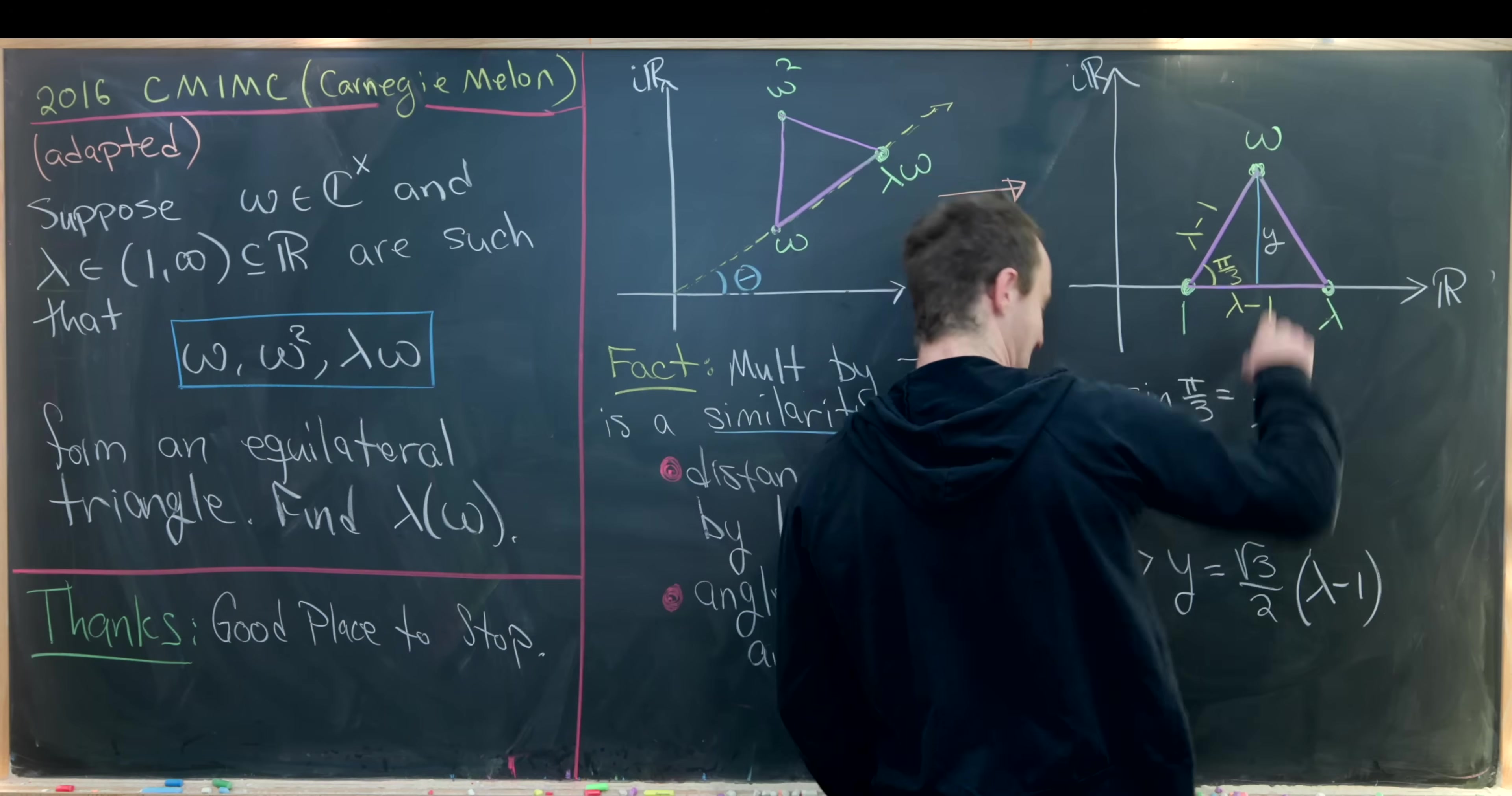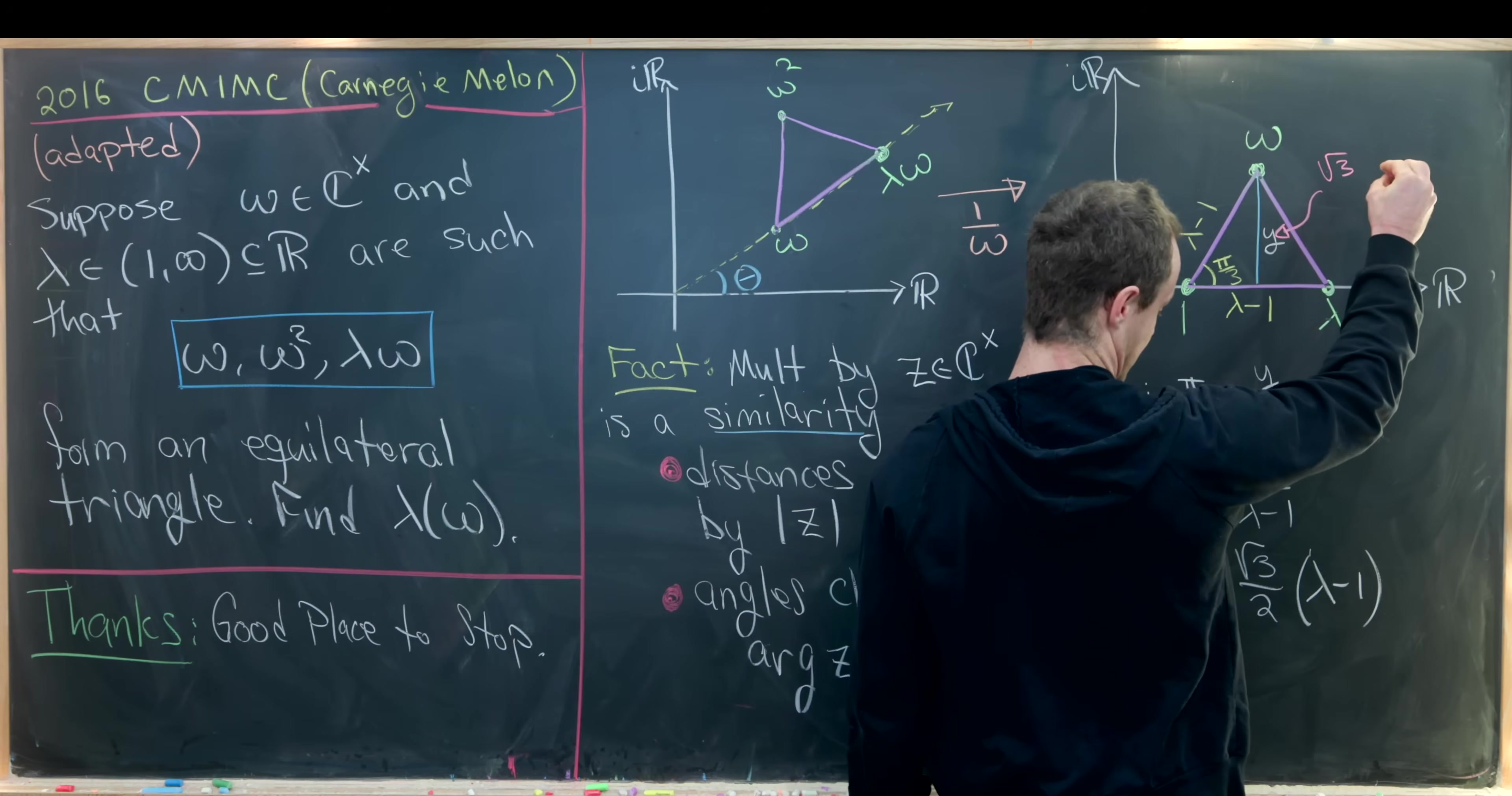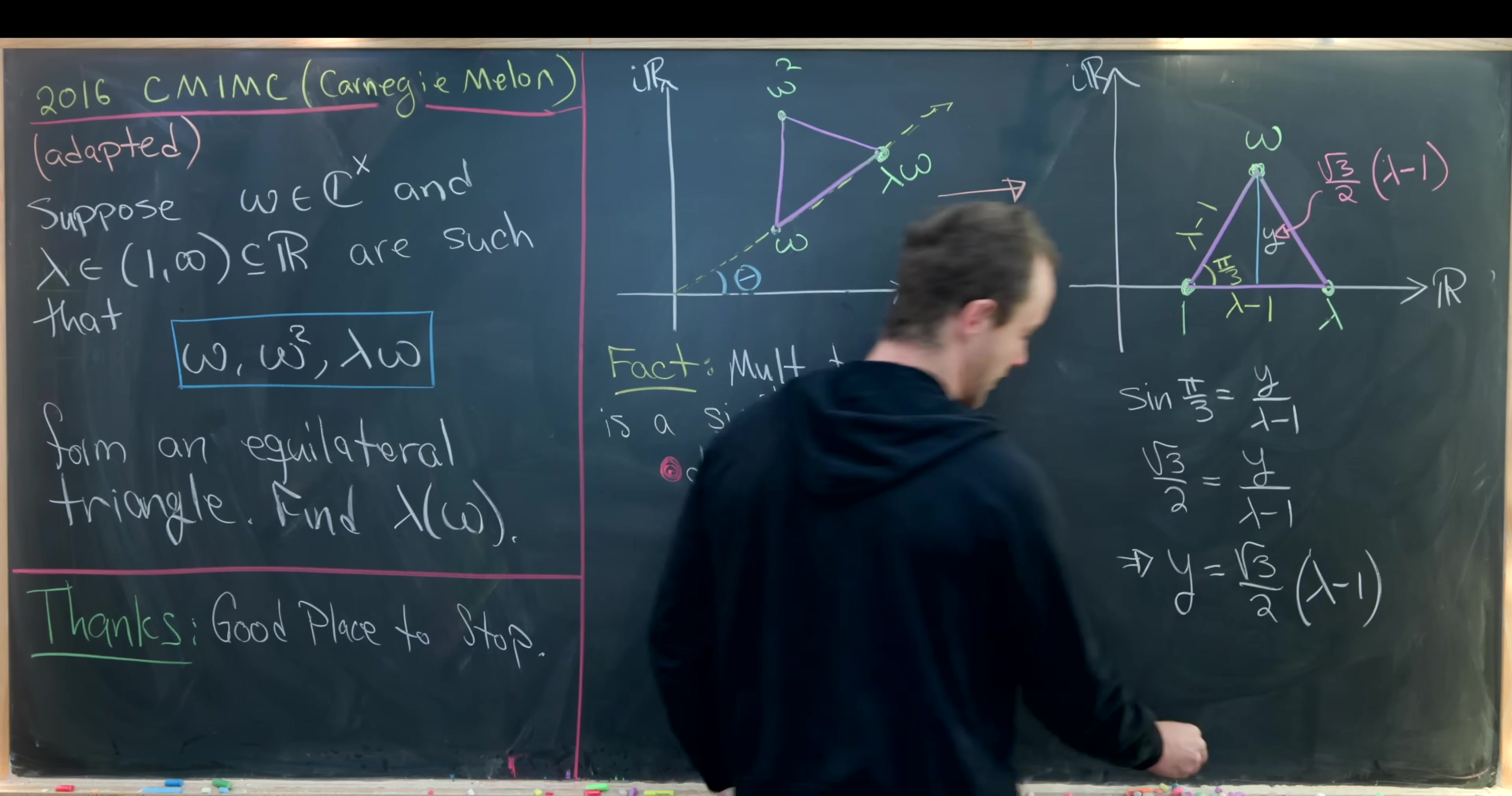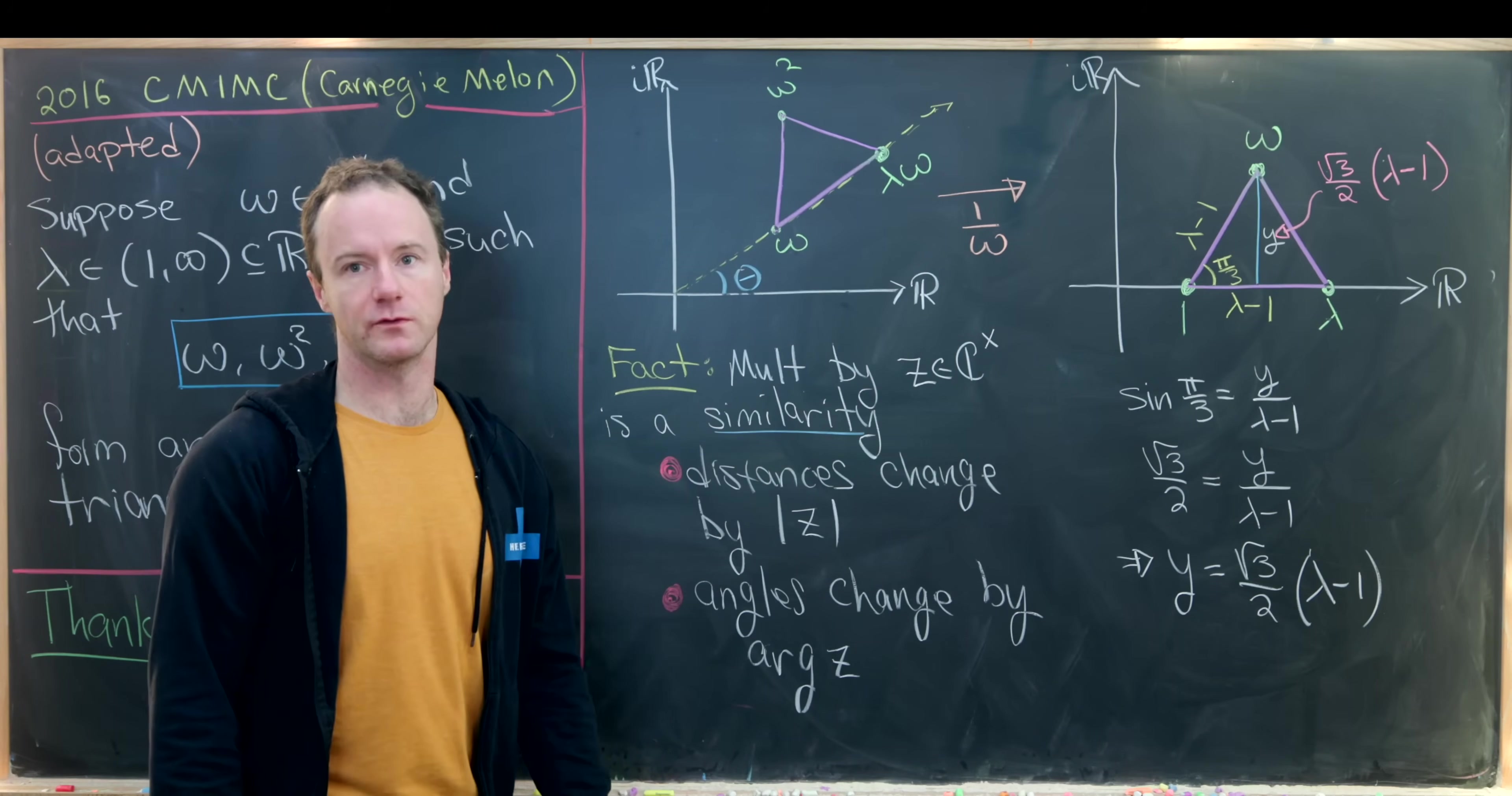So we can maybe add that in here. So maybe I'll just do it like this. This is equal to the square root of 3 over 2 times lambda minus 1. And now that we've got that measurement made, we're actually ready to finish this thing off. But we need a little bit more room.